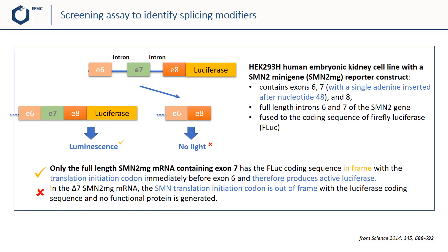How could the screening be set up? The researchers constructed a human cell line with a certain gene construct. They inserted an SMN2 mini gene reporter construct that contains luciferase after exon 8, and before that exon 6 and 7, but with a specific reading frame codon. Only in the case that the full-length SMN2 mini gene containing exon 7 would be produced would the luciferase be in-frame with the translation initiation codon, producing active luciferase and a measurable readout. In case of no effective modulation of splicing and missing exon 7, the luciferase gene would not be readable due to the out-of-frame situation, and thus would not generate the signal.